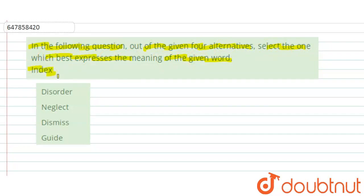Now we have a word given which we basically have to find out. This means the word which expresses the meaning of the given word. So here are four options given: disorder, neglect, dismiss and guide.